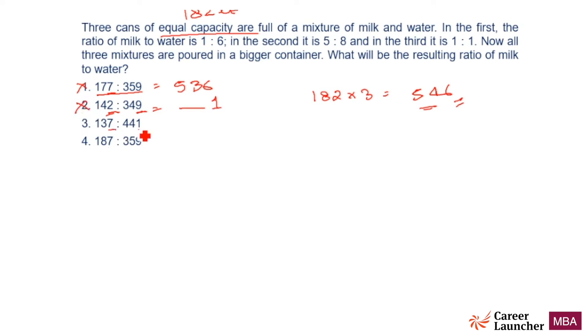What about this one? 711, 8, wrong. What about this one? 187 plus 359 will come out to be 546. This is the answer.